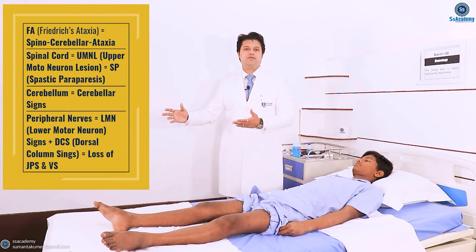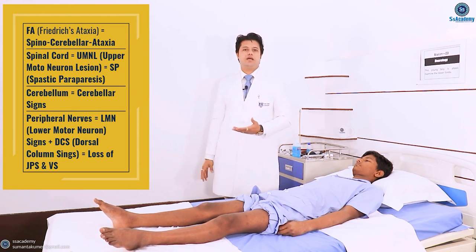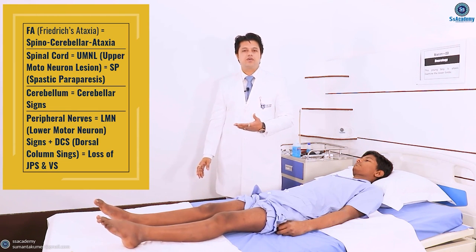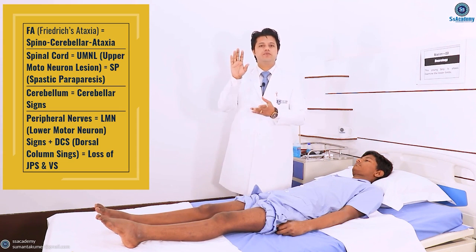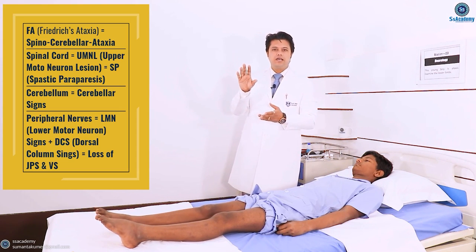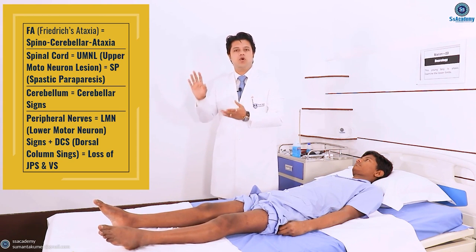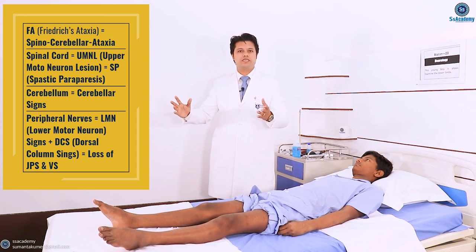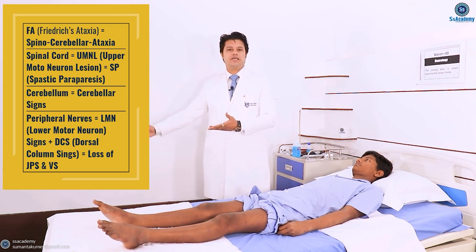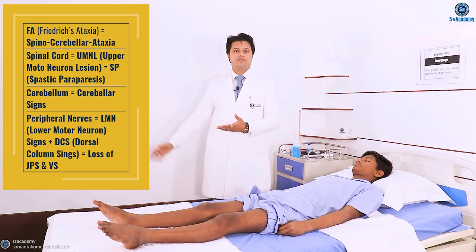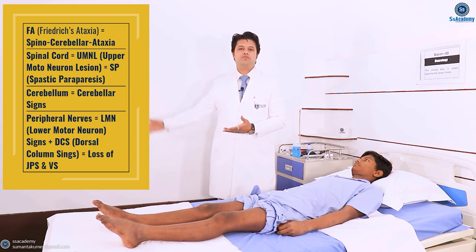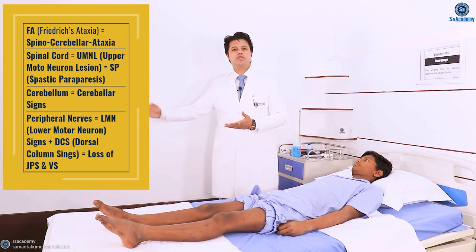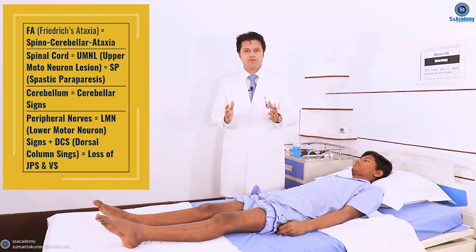Because the peripheral nerves are also involved, we will get lower motor neuron type weakness as well. The spinal cord involvement gives upper motor neuron type lesions, while peripheral nerve involvement gives lower motor neuron weakness — so a mixed picture. The dorsal column signs mean sensory ataxia will be present, with both lower sensory and motor nerves affected alongside upper motor neuron weakness.